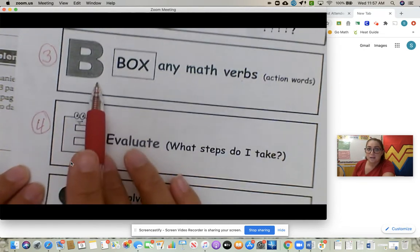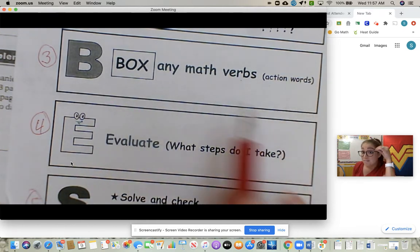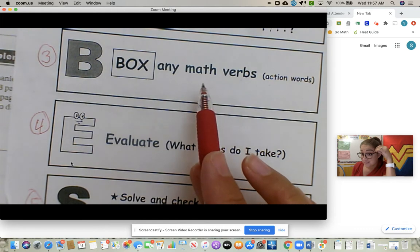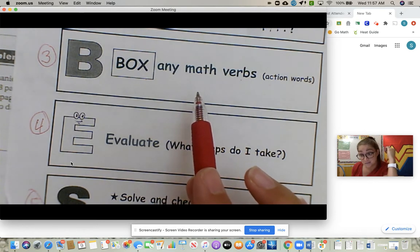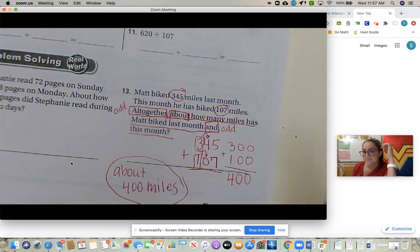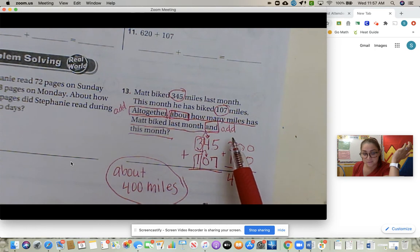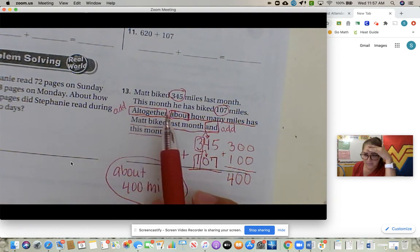Then I jump to three, box the math verbs. These are action words. Now with math verbs, this is important. Math verbs are sometimes not normal verbs that we do in reading and language arts. Math verbs mean something else sometimes. We're going to go over that tomorrow. So I just kind of told you our math verbs today. Altogether means add, so I boxed altogether. I know I'm adding. About means round. So I know I'm not just adding my numbers, I'm rounding first.